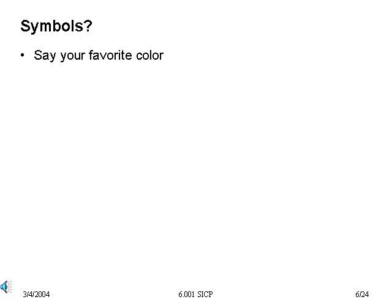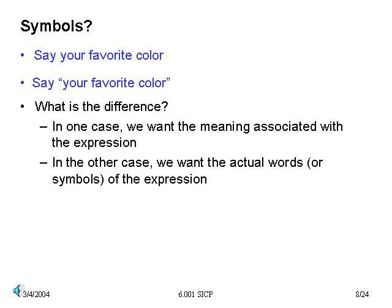Let's motivate why we need a new data type. Suppose I ask you a question — I personally would probably respond by saying blue. But what about if I ask for 'your favorite color'? If you are thinking carefully, you ought to respond by saying 'your favorite color'. So we say two different things in response to these two questions. In the first case, I got the meaning associated with the expression — much like getting the value associated with the name. In the second case, I got the actual expression. The double quotation marks indicated that I wanted the actual expression, not the value associated with it — the actual favorite color versus the phrase 'favorite color'. So in many cases, we may want to make exactly this kind of distinction between the value associated with an expression and the actual symbol or expression itself.